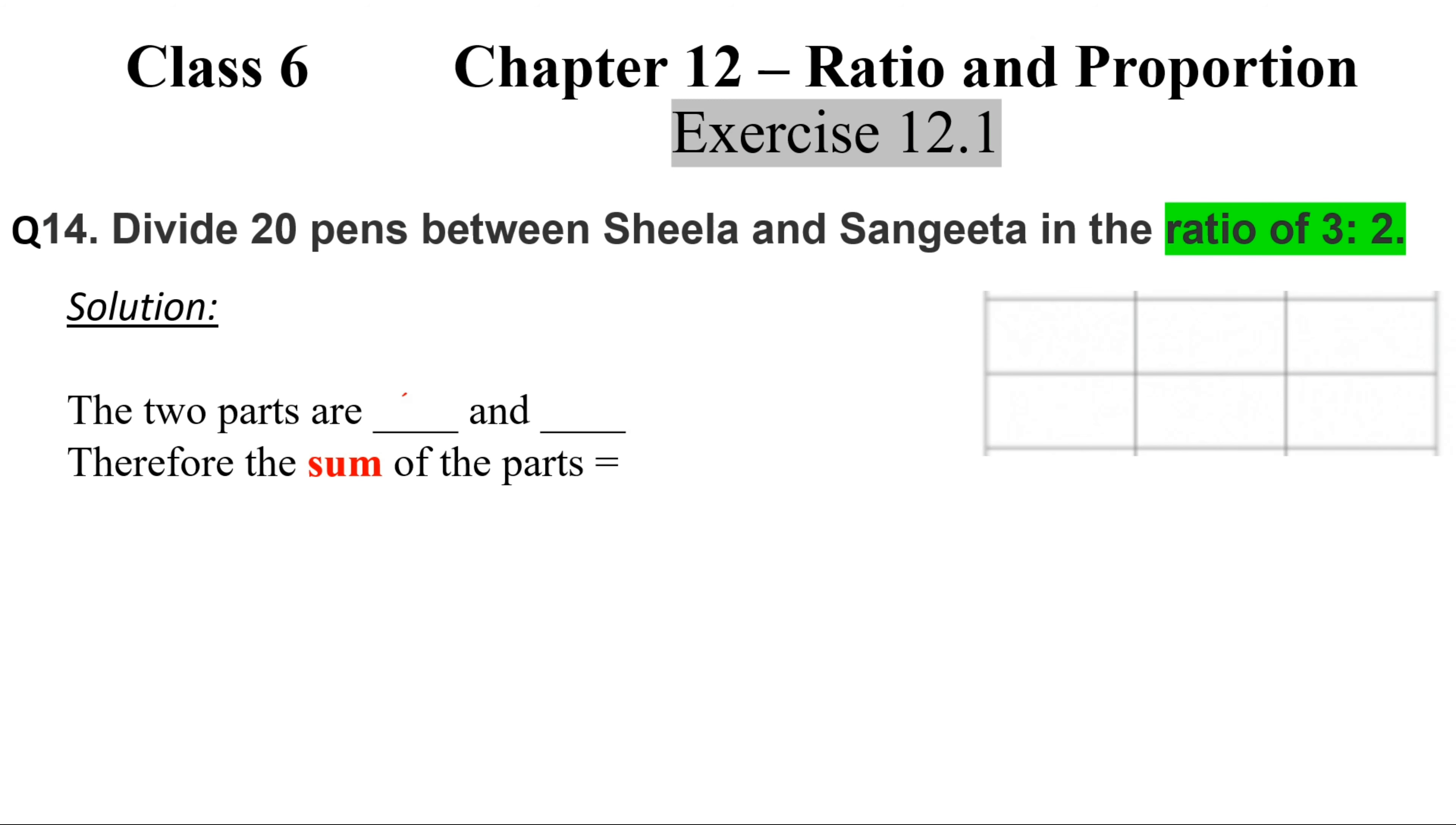The two parts are 3 and 2, therefore the sum of the parts is 3 + 2 = 5. I'll write it here: 3 + 2 = 5.